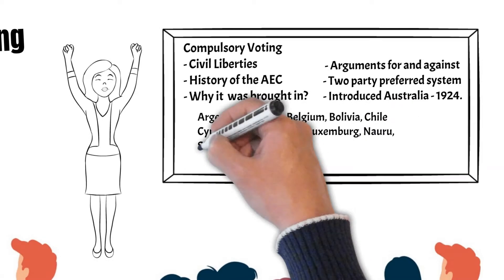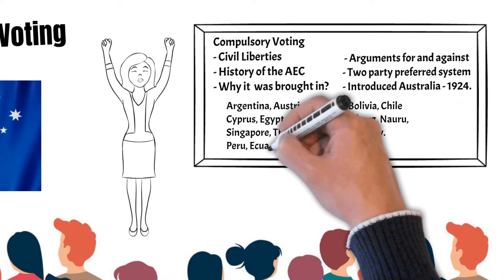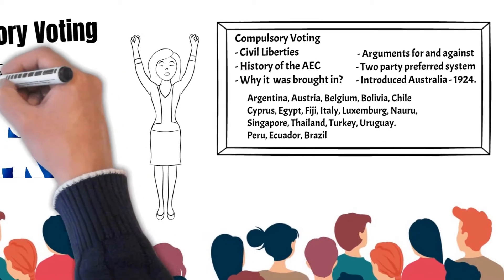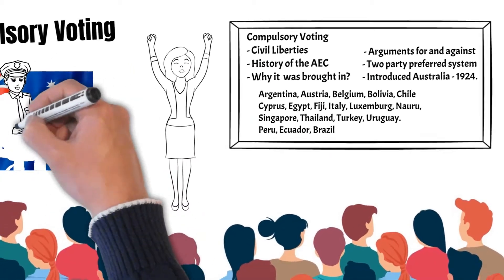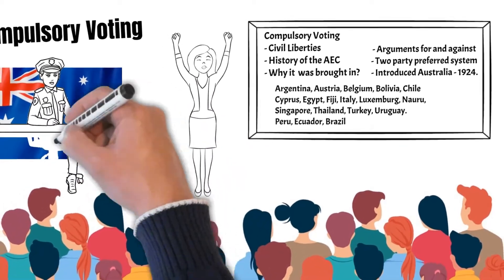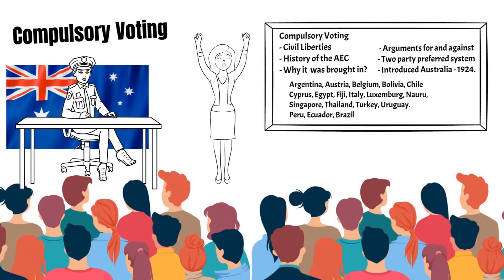These countries include Argentina, Austria, Belgium, Bolivia, Chile, Cyprus, Egypt, Fiji, Italy, Luxembourg, Nauru, Singapore, Thailand, Turkey, and Uruguay. Peru, Ecuador, and Brazil have optional compulsory voting if you are illiterate or over 70. Liechtenstein has compulsory voting but has no penalty for not voting. Each jurisdiction has slightly different voting conditions, eligibility, penalties, and attitudes toward people abstaining from the vote.